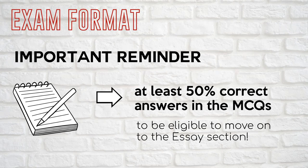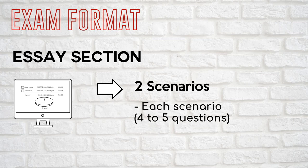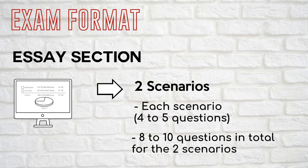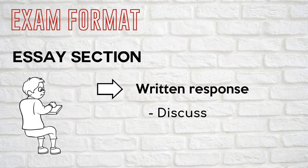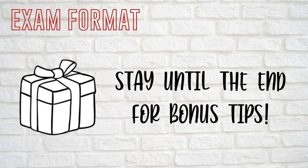If you score at least 50% of the MCQs, the exam will present the essays after you've answered all the MCQs or after three hours have passed, whichever comes first. Once you leave the MCQ section or enter the SA section, you can no longer go back to the MCQs. For the SA section, there are usually two scenarios — two essay questions that are independent, describing a typical business situation. Each case will have four to five questions, meaning eight to ten questions total for the SA section. Your answers may be in the form of a written response or a calculation.